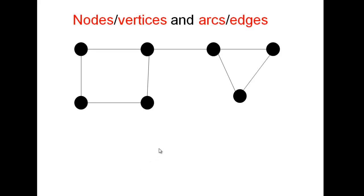The most important basic terms are the points and the lines joining the points. We call the points either nodes or vertices, and we call the lines joining the points arcs or edges.